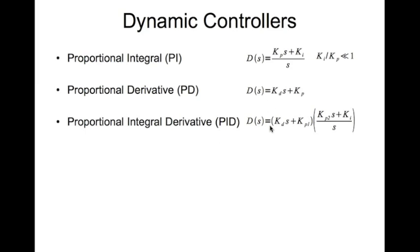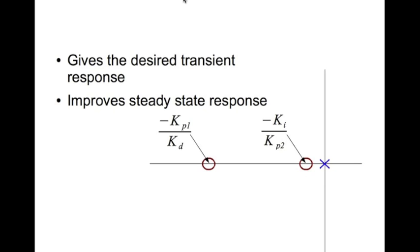The proportional-integral-derivative (PID) controller is a combination of PI and PD — you multiply both transfer functions together. In the pole-zero map, the PI part has a pole at zero and a zero at minus ki divided by kp2, and the PD part has a zero at minus kp1 divided by kd. The PID controller provides both the desired transient response and improved steady-state response. You use the PD part to make the root locus pass through the desired complex pole location, then use the PI part to reduce steady-state error.